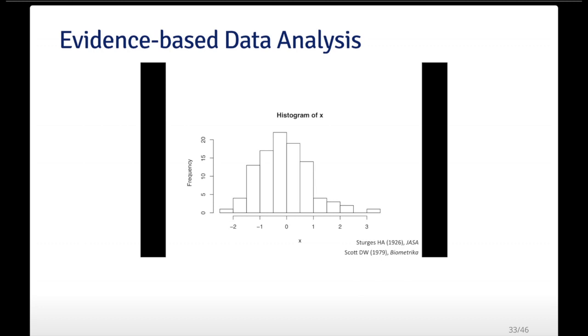The paper is actually a very generous term, this thing was like this long. But it suggested that the bandwidth should be done according to this formula, basically. Later on, when kernel smoothing became popular, David Scott wrote a paper in Biometrika which talked about choosing the bandwidth based on integrated mean squared error type measures.